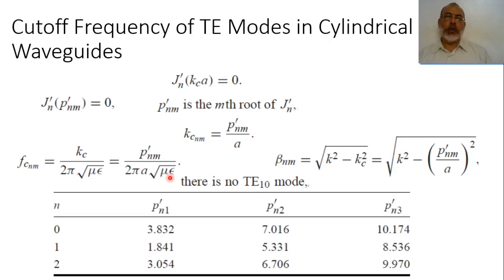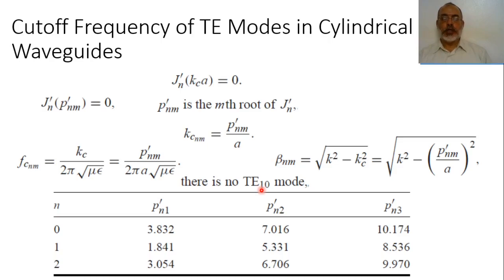To remember, in the case of rectangular waveguide it was TE10, but in the present case there is no TE10 mode. So the lowest cutoff frequency, or the dominant mode, in circular waveguide is the TE11 mode.